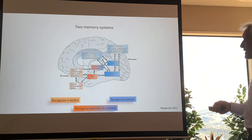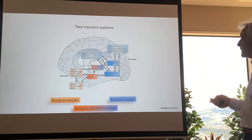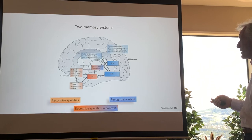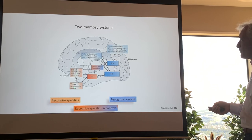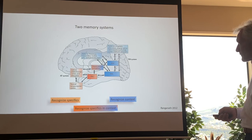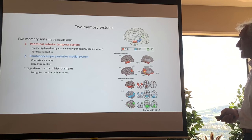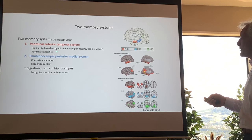Memory can be divided into two systems: an anterior system which recognizes specifics, and a posterior system which recognizes context. The posterior system involves the retrosplenial part of the posterior cingulate cortex and the parahippocampal area — basically two parts of the default mode network. The anterior component involves the lateral orbitofrontal cortex, amygdala, and ventral temporal polar cortex — more the emotional aspects of specific memory. Both anterior and posterior systems integrate into the hippocampal formation.